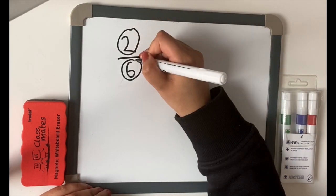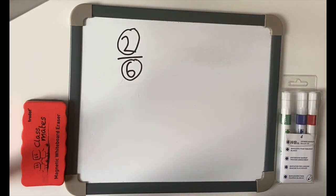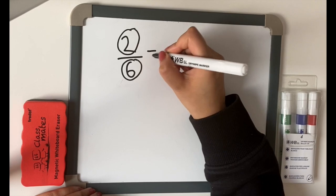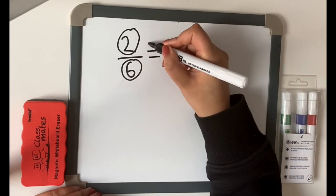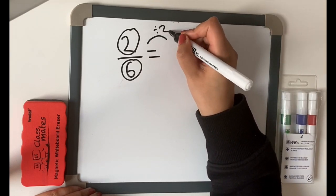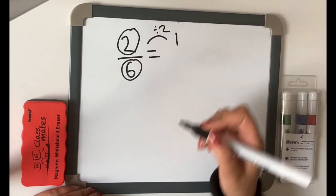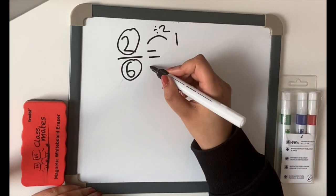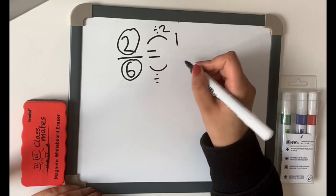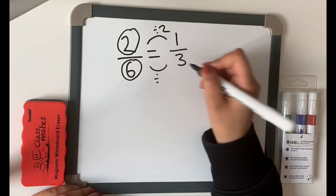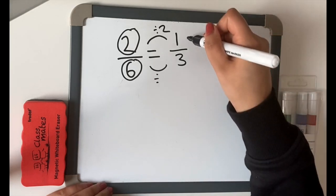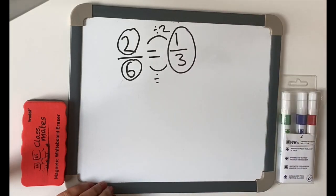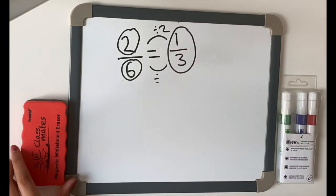So if you look at 2 sixths, have a think about which number will go into 2 and 6. Well, I know they will both go into the 2 times table. So if we do 2 divided by 2 equals 1. Don't forget what you do to the top, you have to do to the bottom. So 6 divided by 2 equals 3. So the answer in simplest form is a third. That's how we simplify fractions.